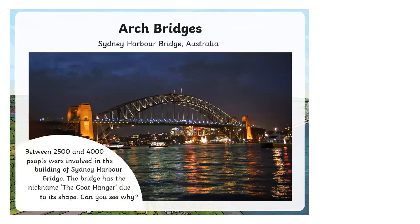This is an example of an arch bridge — the Sydney Harbour Bridge in Sydney, Australia. Between 2,500 and 4,000 people were involved in building it. The bridge has the nickname 'the coat hanger' due to its shape. Can you see why?